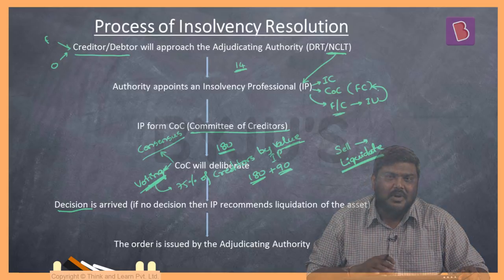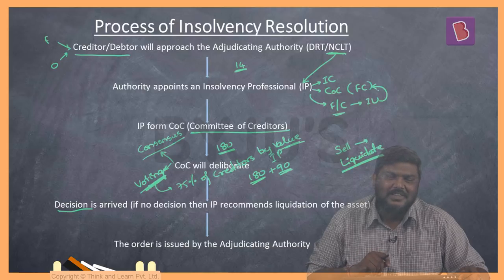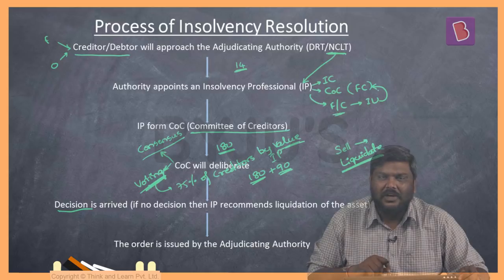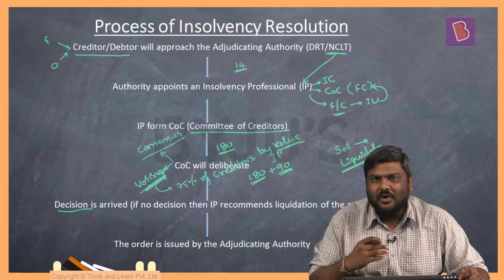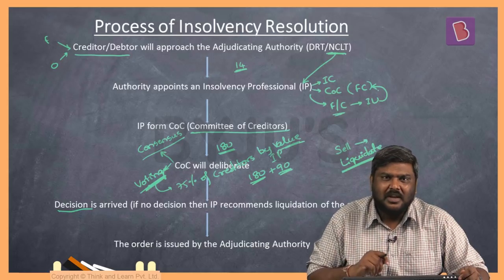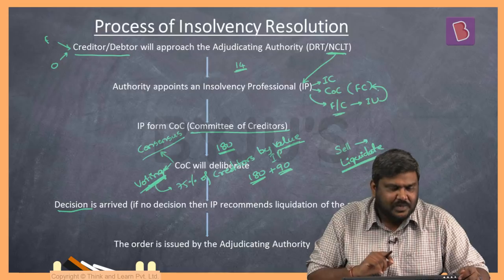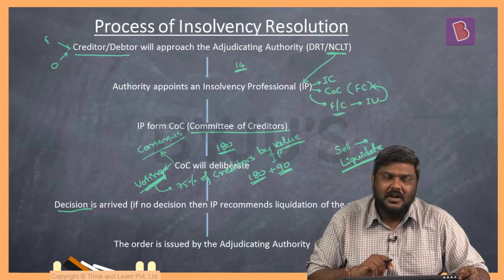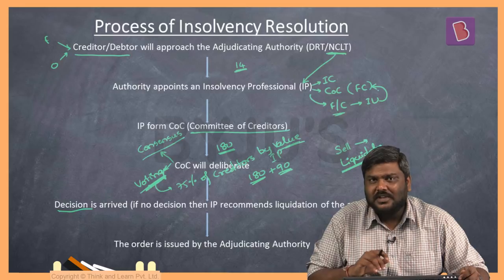If the committee of creditors cannot reach a decision within 180 days, the insolvency professional can provide an extra 90 days. If no decision is reached at the end of 270 days, the insolvency professional by default recommends liquidation to the adjudicating authority, which issues an order giving effect to this recommendation. This is the basic process prescribed under the Insolvency and Bankruptcy Code.